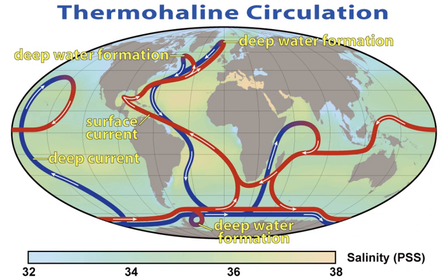Wind-driven surface currents, such as the Gulf Stream, travel polewards from the equatorial Atlantic Ocean, cooling en route, and eventually sinking at high latitudes, forming North Atlantic Deep Water. This dense water then flows into the ocean basins. While the bulk of it upwells in the Southern Ocean, the oldest waters, with a transit time of around 1,000 years, upwell in the North Pacific.